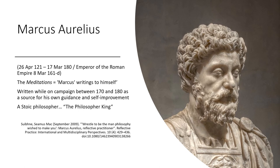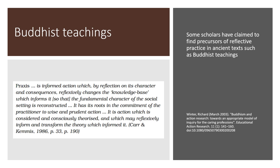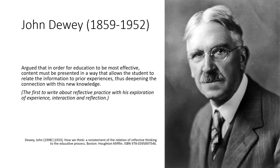Stoics believe that the path to happiness for humans is found in accepting the moment as it presents itself, by not allowing yourself to be controlled by the desire for pleasure or the fear of pain, and by using one's mind to understand the world and doing your bit for the world around you. By working together and treating others fairly and justly, they say happiness will ensue. Some academics have claimed to find precursors of reflective practice in the ancient texts such as Buddhist teachings, and in particular around the practice of praxis, a form of mindful reflection on one's life.